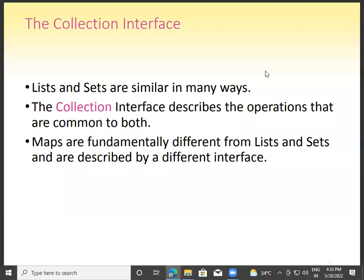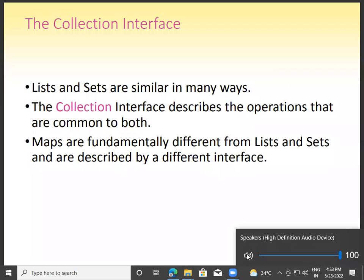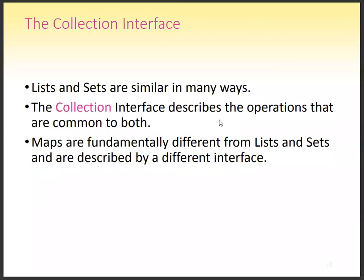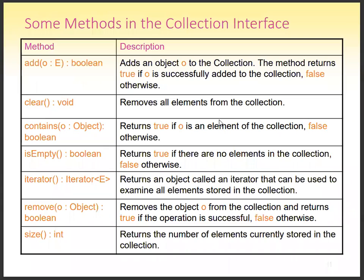We are going to consider the collection interface and the collection framework. We have to see the sets, the list, and the ArrayList. Basically, the collection describes lists and sets — these are similar to the collection interface, which just provides references. We need to override some of its methods in our program to use those utilities. The collection interface describes operations common to both lists and sets. Maps are fundamentally different from lists and sets.